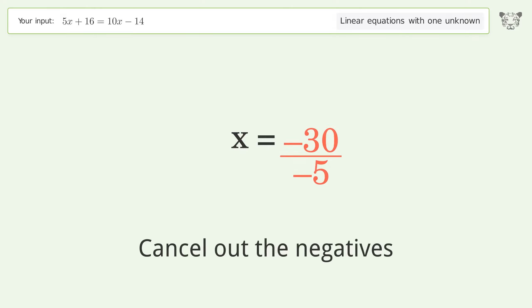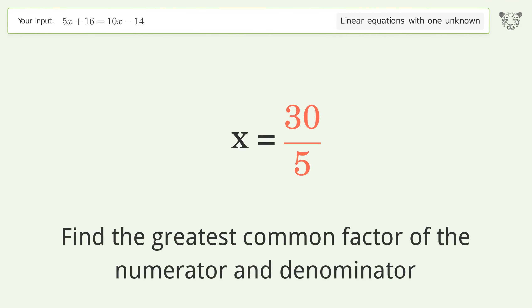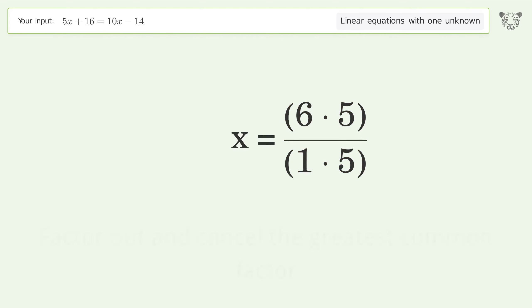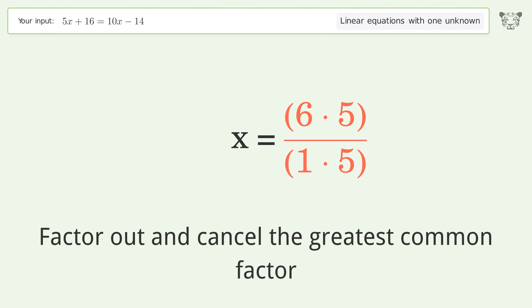Cancel out the negatives. Find the greatest common factor of the numerator and denominator. Factor out and cancel the greatest common factor.